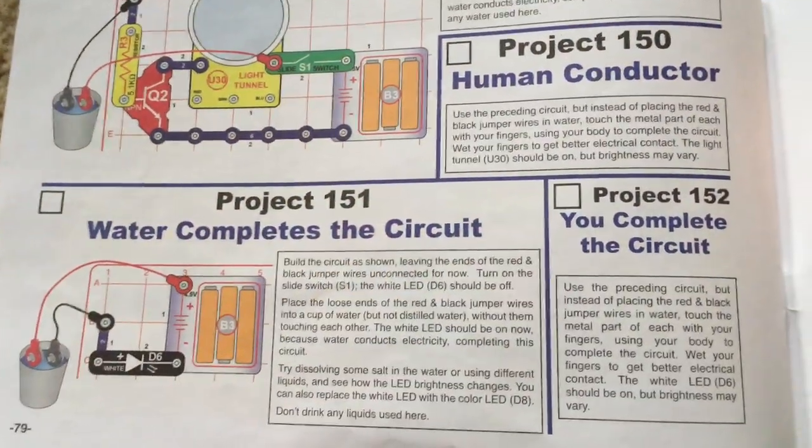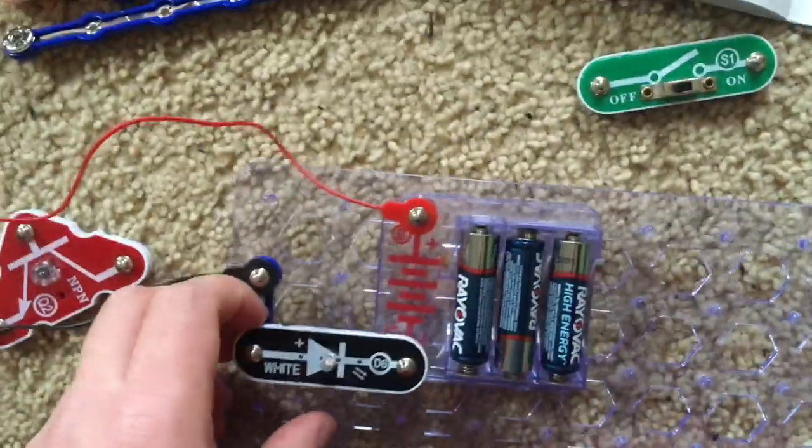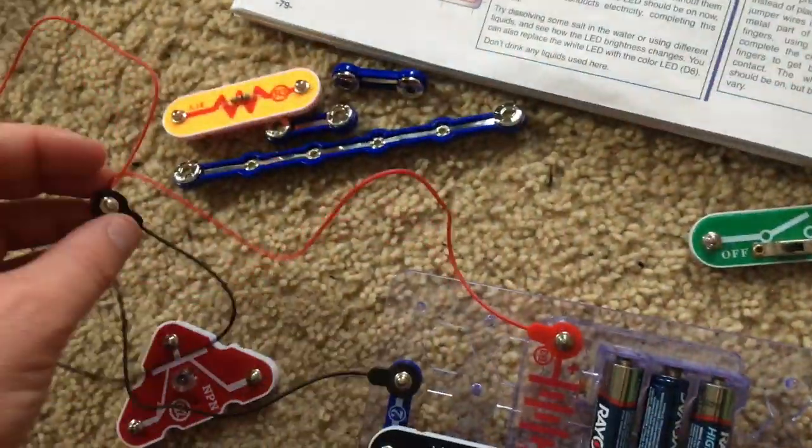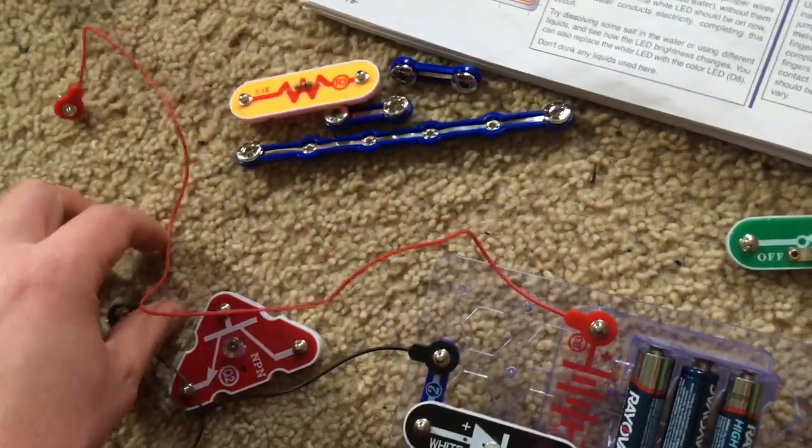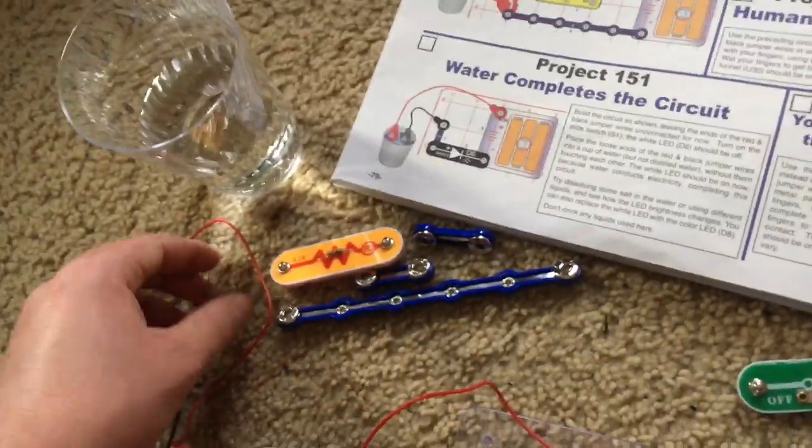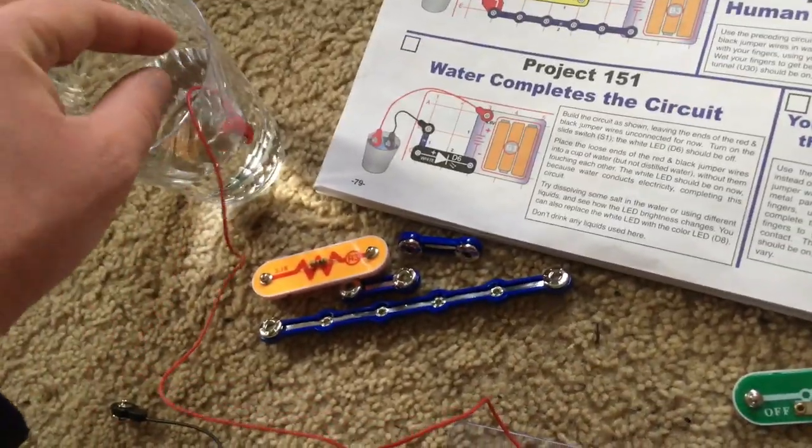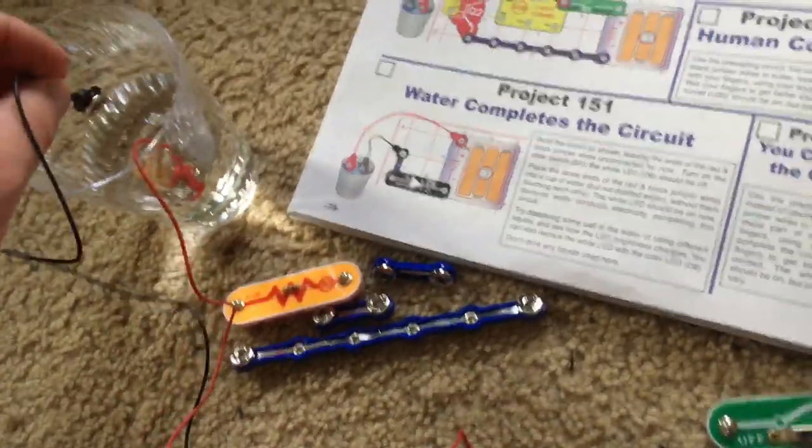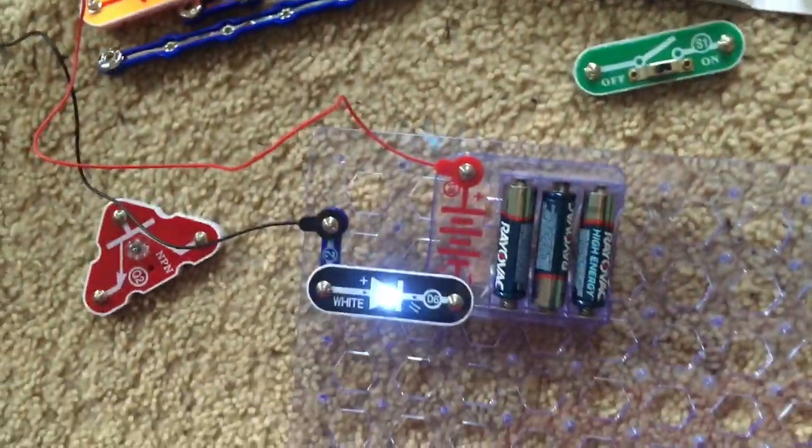Project 151, water completes the circuit. We will build this simple circuit and include the red and black jumper wires, and then we will use a cup of water and place the ends of both jumper wires in the water. The white LED comes on.